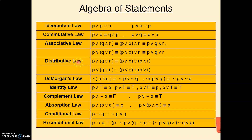In the Distributive law, it is similar to the Associative law, but the difference is that one symbol is ∨ and another is ∧. So if P∧(Q∨R) is given, we distribute P to both terms: P∧(Q∨R) is equivalent to (P∧Q)∨(P∧R). That is why it is called the Distributive law.